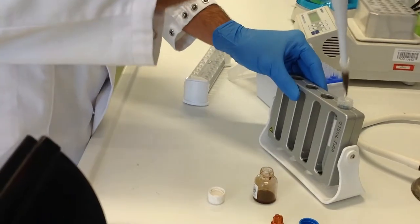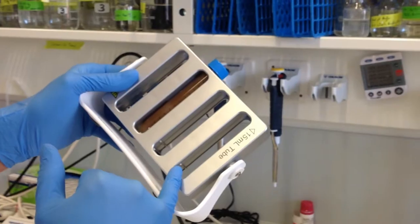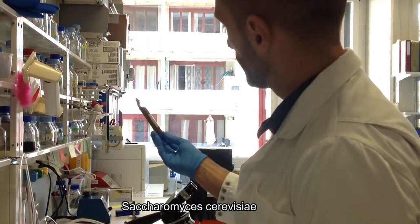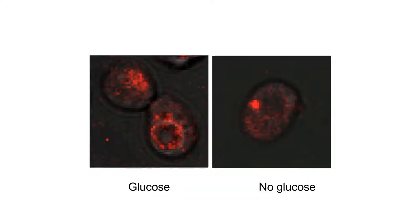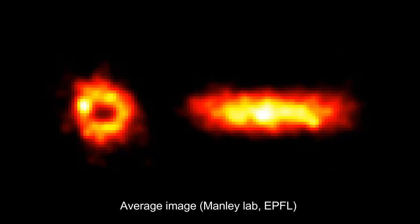We used the cell biology model which is the yeast Saccharomyces cerevisiae, and we found that when we remove glucose from the media, TORC1 assembles into a single inactive structure. In collaboration with a group at EPFL, using super-resolution microscopy, we found that this structure is actually a hollow tube.